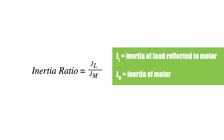On the other hand, if the inertia of the motor is significantly higher than the inertia of the load — that is, if the inertia ratio is very low — it's likely that the motor is oversized, which has negative implications throughout the system, including higher initial cost, higher operating cost, larger footprint, and the need to oversize other components such as mounting hardware, couplings, and cables.